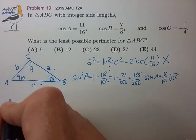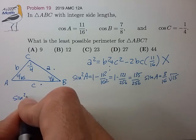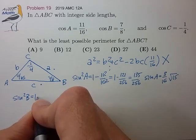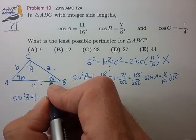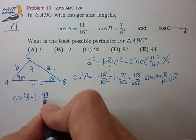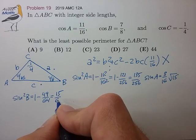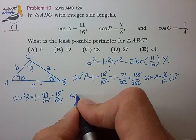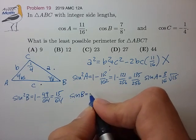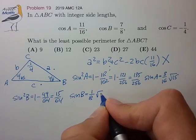Sine squared of B is 1 minus cosine of B squared. Sine of B is 1/8 square root of 15.